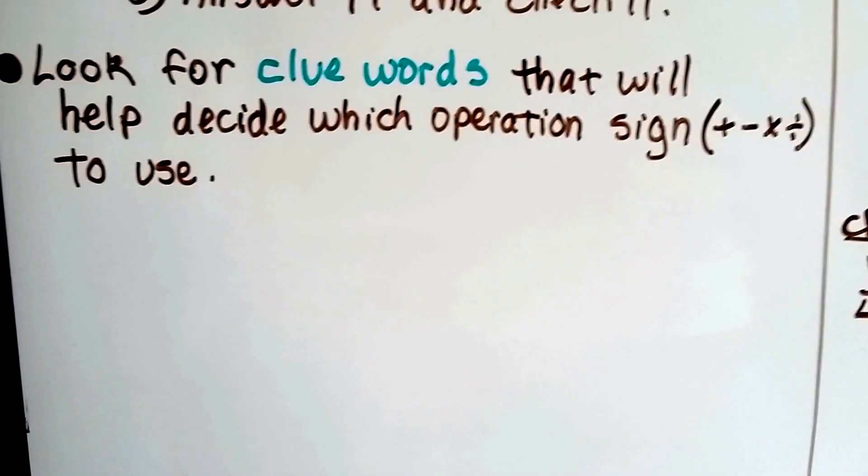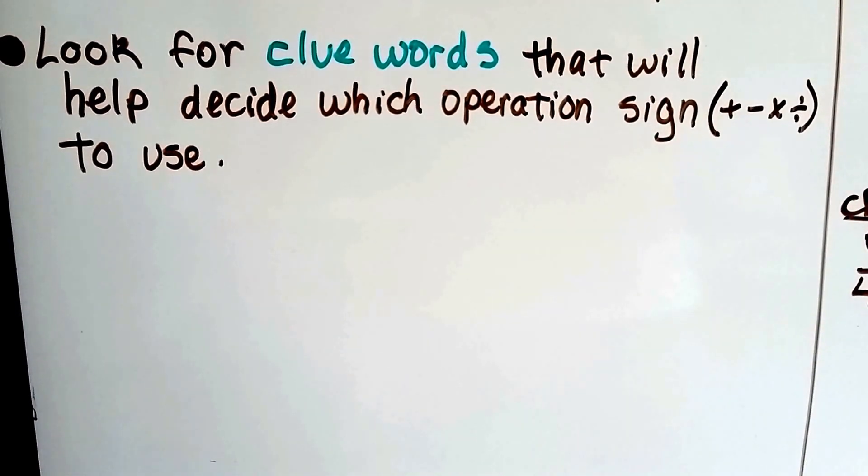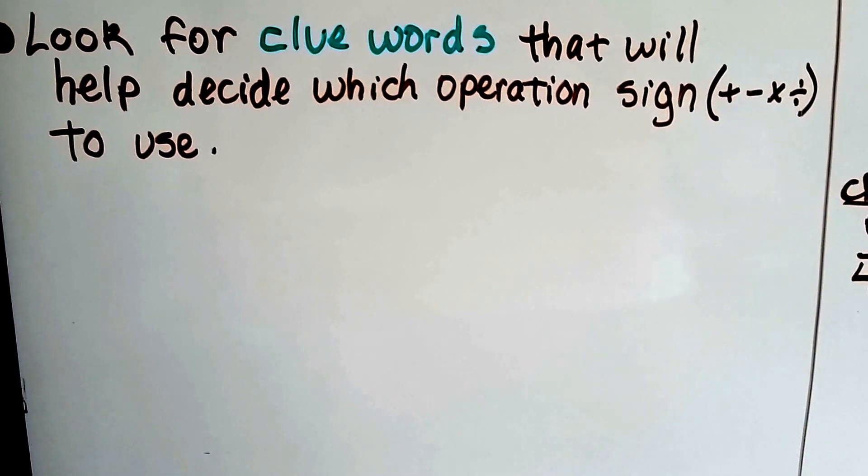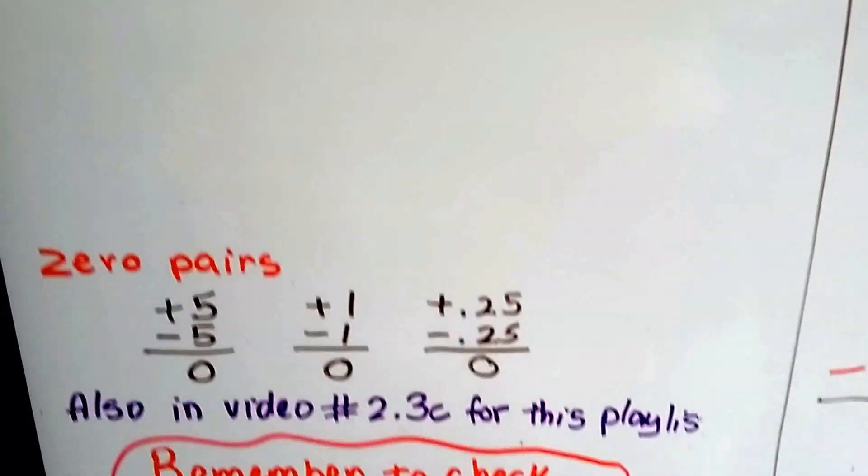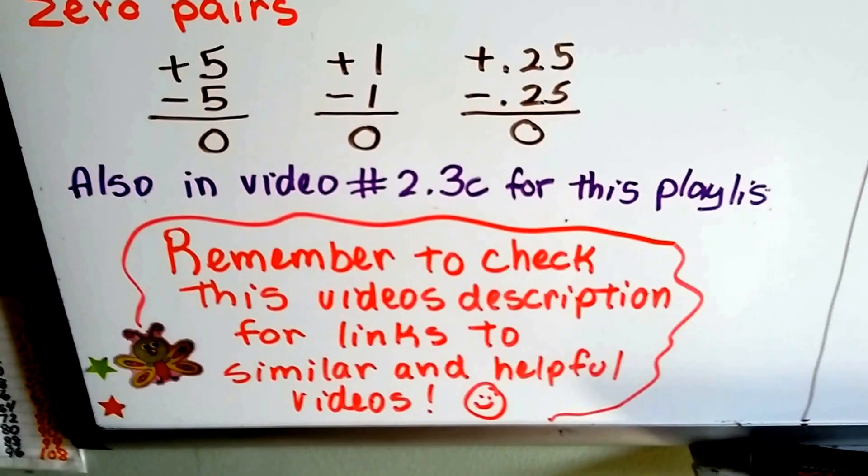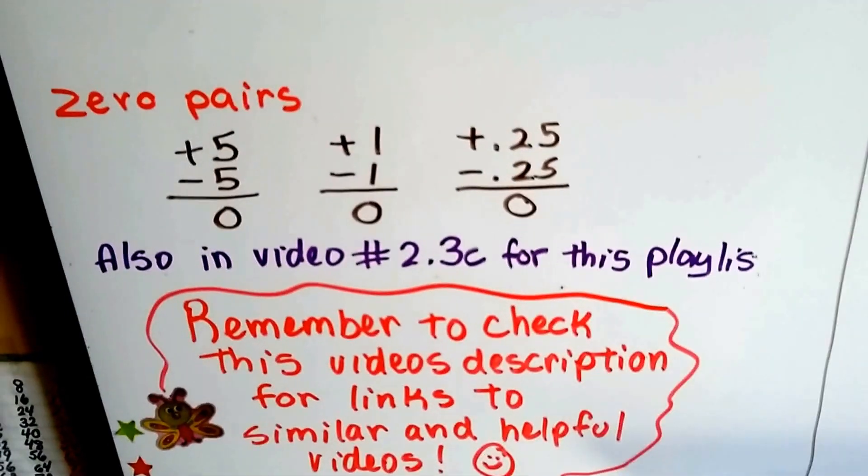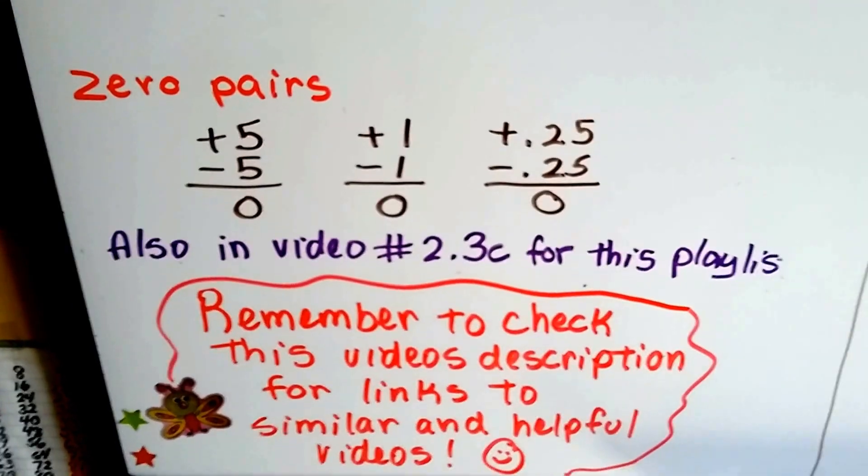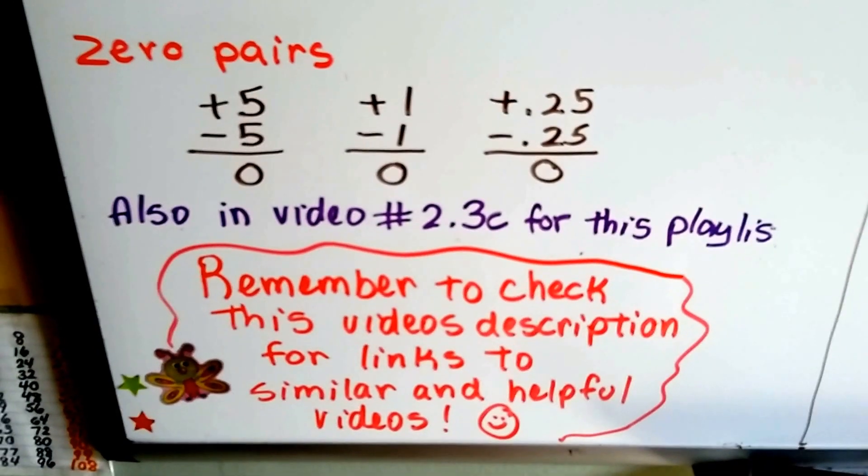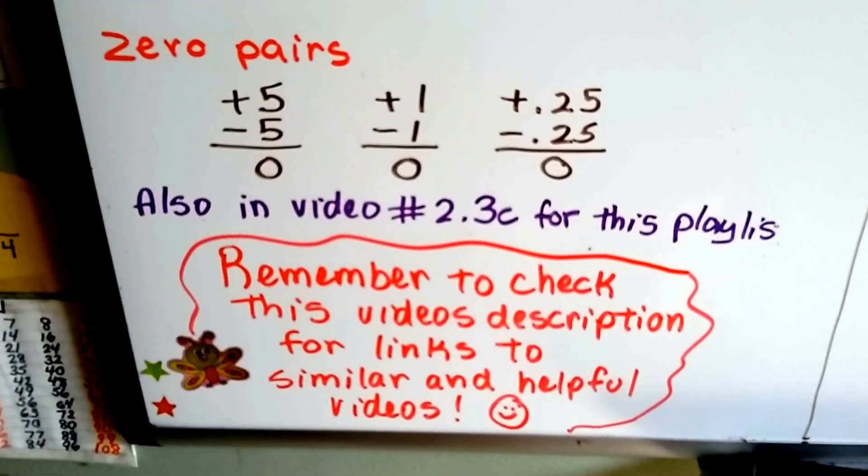So remember to look for clue words that will help us decide which operation sign to use. Are we going to add, subtract, multiply, or divide? And remember that we can make zero pairs. This was also in video number 2.3c for this playlist. And there's going to be a link in this video for that and other videos that'll help you.